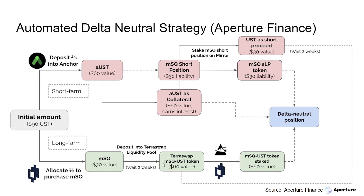Because there's this impermanent loss dynamic, this strategy isn't purely delta-neutral. If the mSQUARE price moves up and I close my long farm position, I get back fewer mSQUARE shares than I put in, which doesn't necessarily cancel out with the short position. What Aperture Finance does is automate rebalancing of rewards in order to keep the position as delta-neutral as possible — in a way that I couldn't do manually.